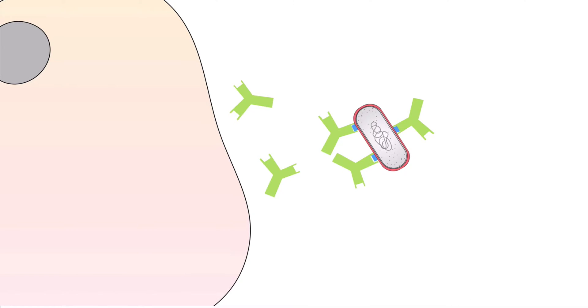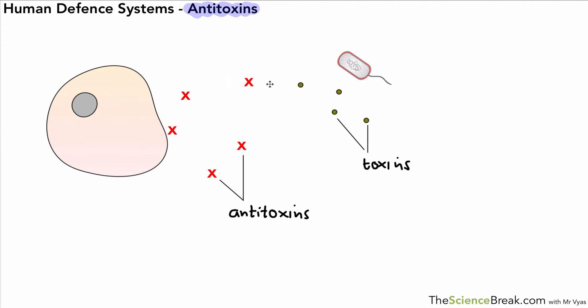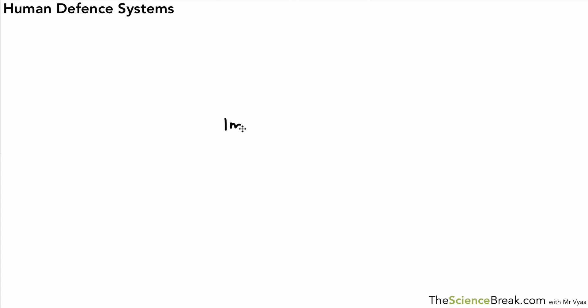The next method is antitoxins. The pathogen produces toxins, and the white blood cell produces antitoxins to neutralize what the pathogen is making. The antitoxin neutralizes the toxin and makes it harmless, which prevents the pathogen from doing damage to cells and tissues and prevents you from feeling ill.